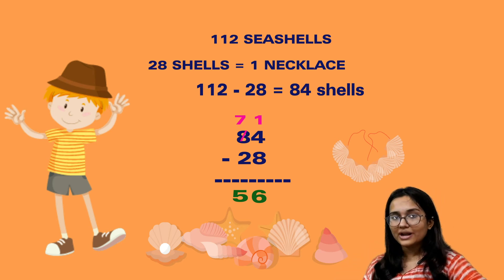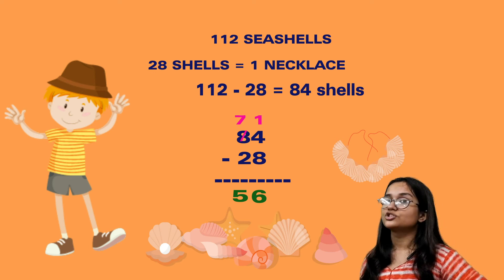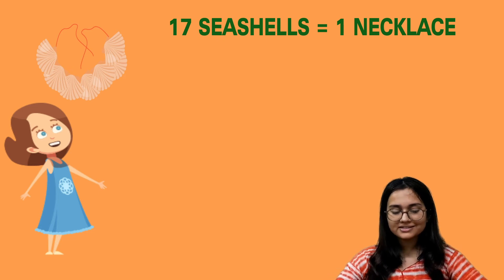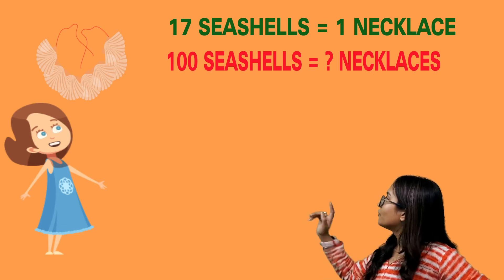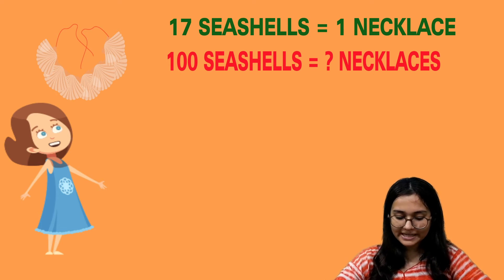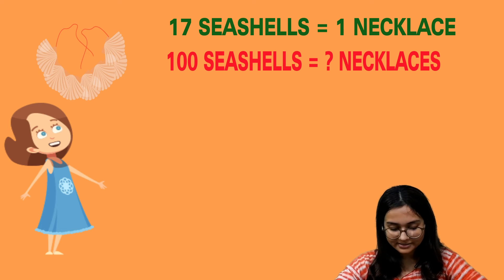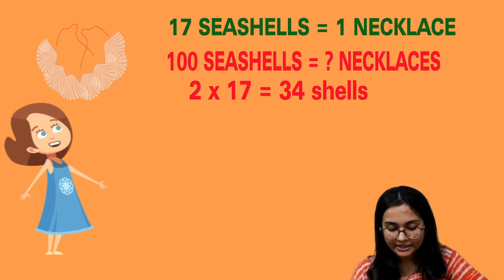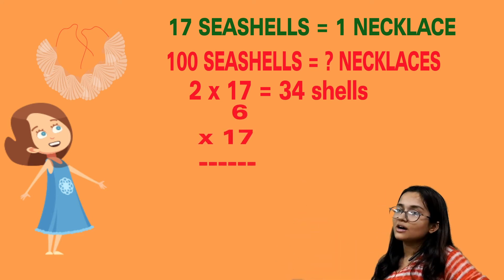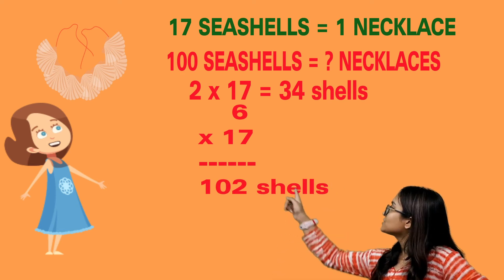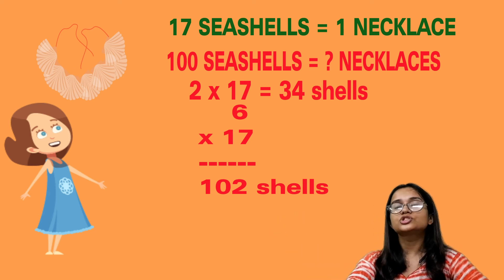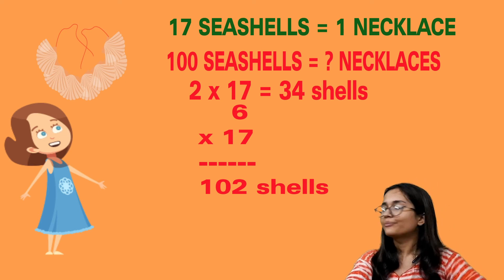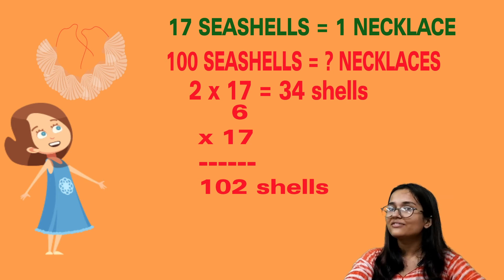Similarly, you need to multiply, subtract, and find answers for the rest of the questions. Now for a try-these question: Kannu made a necklace of 17 sea shells — how many such necklaces can be made using 100 sea shells? Number of shells used in 2 necklaces is 2 × 17 = 34. For 6 necklaces, 6 × 17 = 102. Since 102 shells are required for 6 necklaces but only 100 are available, Kannu can only make 5 necklaces out of 100 shells.